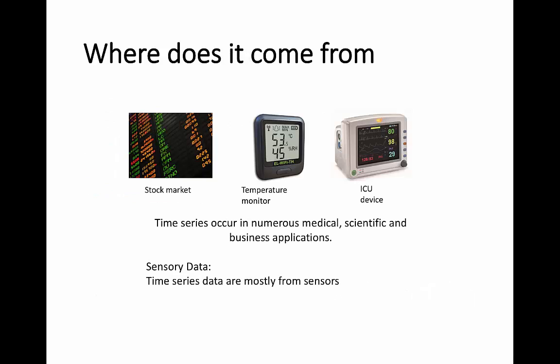Where does time series data come from? Time series occur in numerous medical, scientific, and business applications. For example, we can get the stock price from the stock market, temperature values from thermometer readings, and heart rate or blood pressure from ICU devices. Most of these time series data today come from sensors, and sensory data is what we are interested in when working on embedded systems.